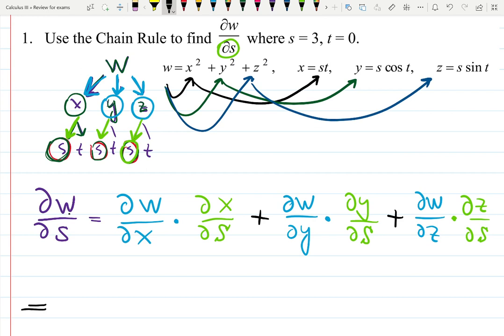Blue one: derivative of W with respect to X - I need to look here at first, that will be 2X times derivative of X with respect to S. I'm looking over here, that is times T because S is the variable, T is the constant.